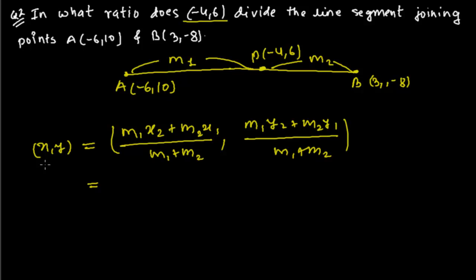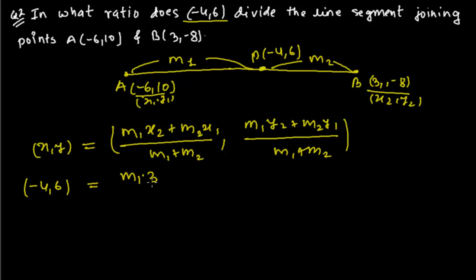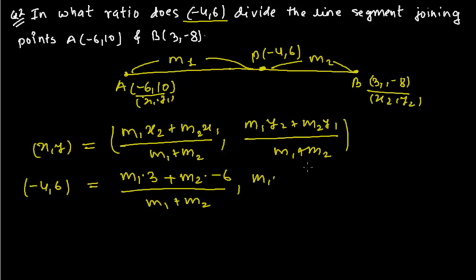Now let me apply this formula for the point (-4, 6). Here M1 is not given. Let me suppose B(3, -8) as (x2, y2) and A(-6, 10) as (x1, y1). So M1·x2 = 3, plus M2·x1 = -6, whole divided by M1 + M2. For the y-coordinate: M1·y2 = -8, plus M2·y1 = 10, whole divided by M1 + M2.